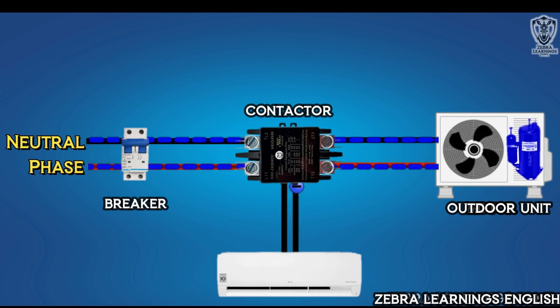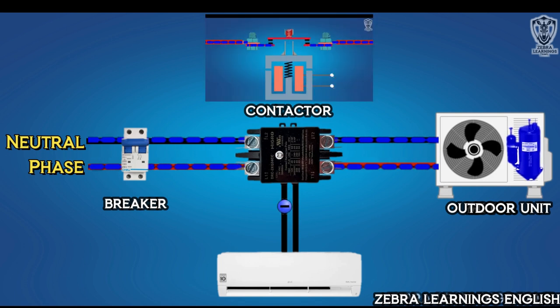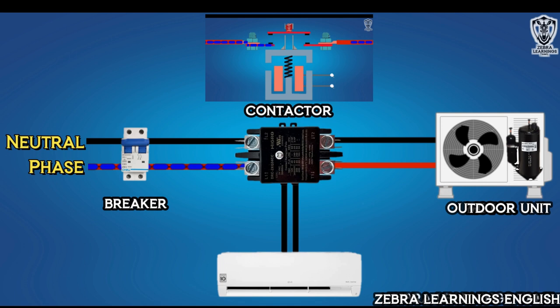After the room temperature reaches the set point, the indoor unit will cut off the 24-volt power supply. Then, contactor terminal will come to normal position and outdoor unit will be cut off. This is how the contactor works.